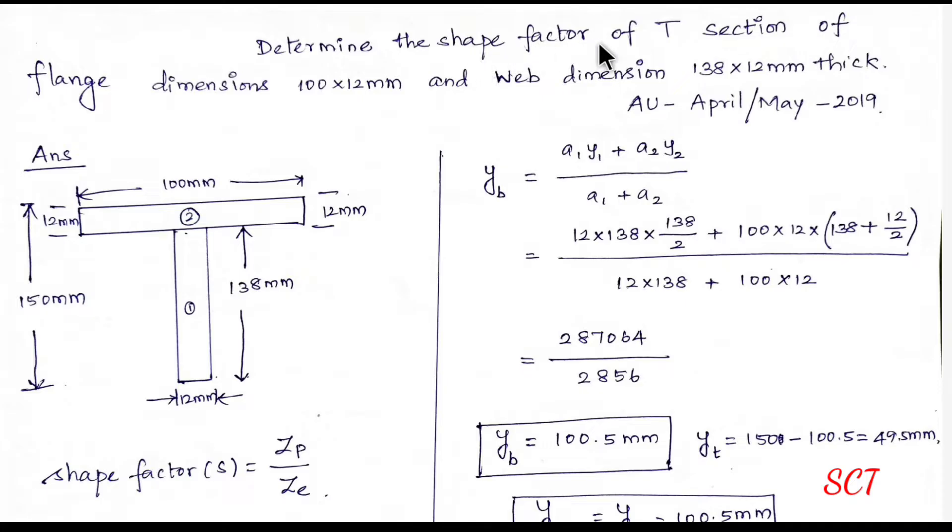Let's see, determine the shape factor of T-section. A flange dimension is 100 x 12 mm, web dimension is 138 x 12 mm. Let's look at the shape factor of T-section.